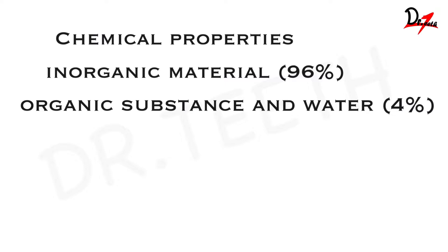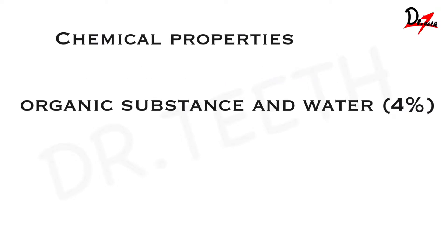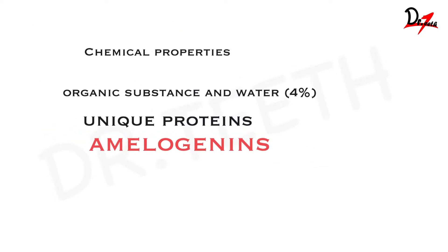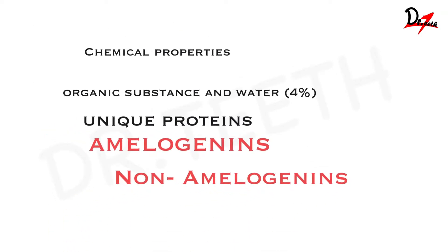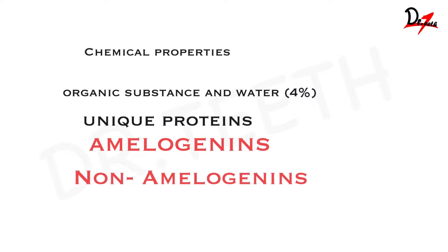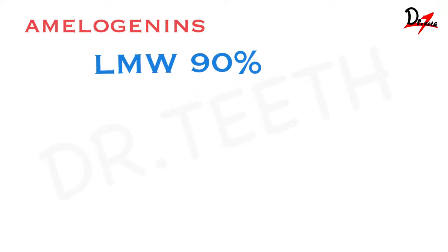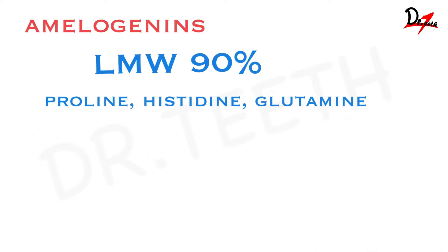Starting with the organic substance, we have a few unique proteins in the enamel, and if we divide them, they can be divided into two things: amelogenins and non-amelogenins. The amelogenins are low molecular weight proteins and they are about 90 percent of the enamel protein. These are rich in proline, histidine, and glutamine, and they are hydrophobic in nature — meaning they repel water.